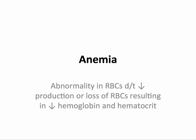Anemia is defined as an abnormality in red blood cells due to a decrease in production or a loss of red blood cells, resulting in a decrease in hemoglobin and hematocrit. So every form of anemia will present with a decreased hemoglobin and hematocrit.